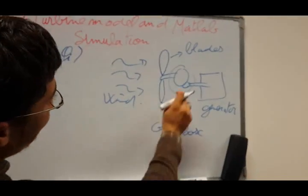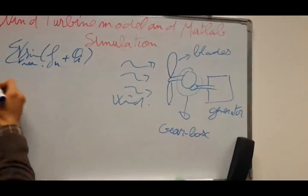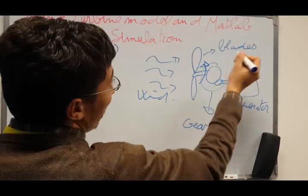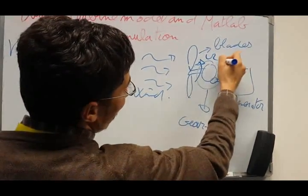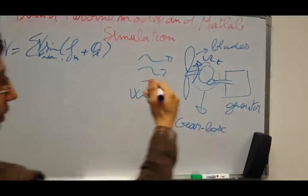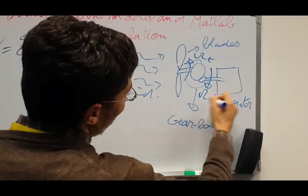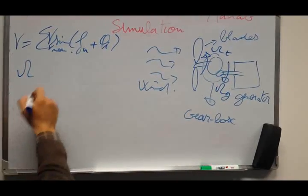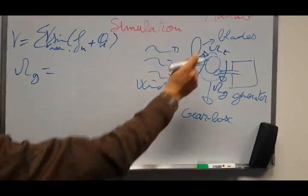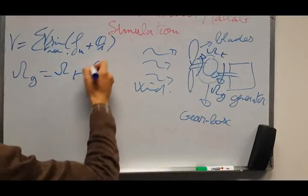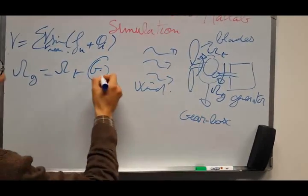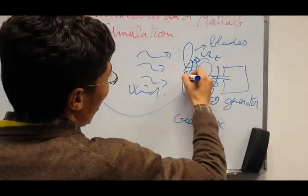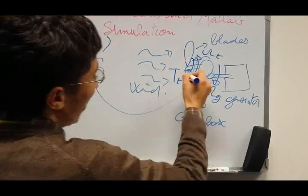The gearbox can be modeled by a gain. We obtain the speed of the turbine increased into the speed of the generator. For this reason, the speed of the generator is the speed of the turbine multiplied by the gain of the gearbox. The same applies to the torque — the turbine torque can be decreased into the torque of the generator.